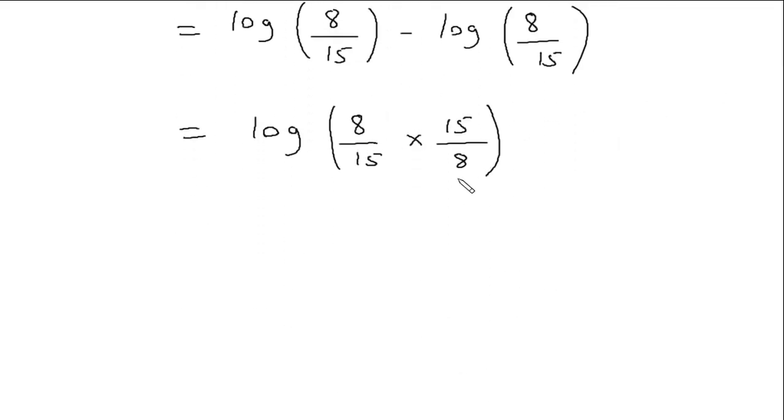Now this 8 and this 8 will get cancelled and this 15 and this 15 will get cancelled. So this will be log 1 and log 1 is 0.